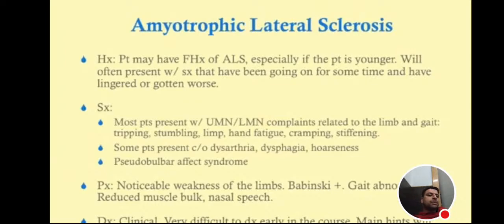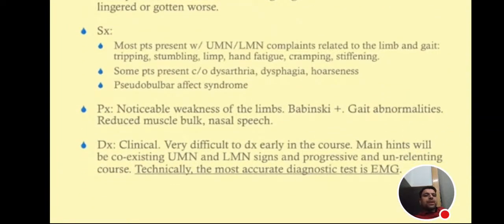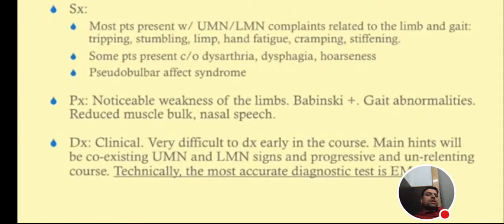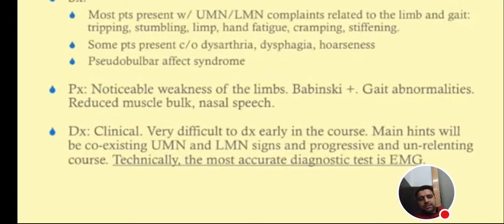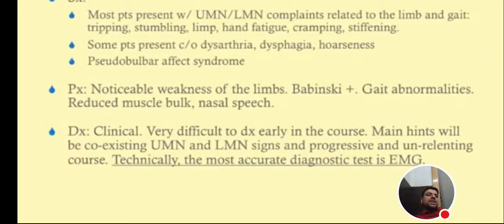In ALS, the patient may have a family history. If someone has upper and lower motor neuron symptoms together, ask for family history. It often presents in younger patients with symptoms that have been progressing over time. Most patients present with upper and lower motor neuron complaints related to limb and gait — tripping, cramping, and stiffening — as well as dysarthria, dysphagia, hoarseness, and pseudobulbar effect.